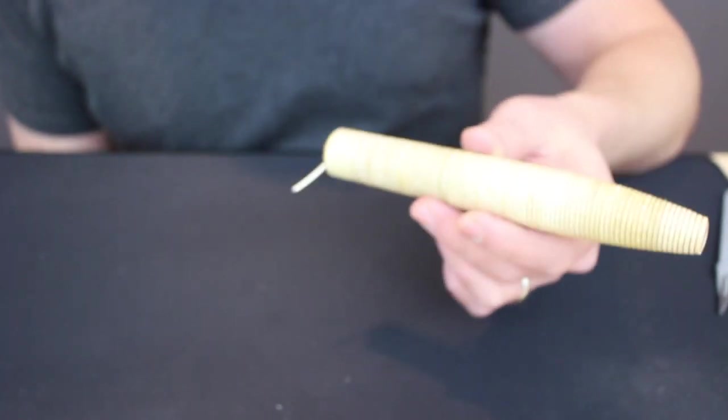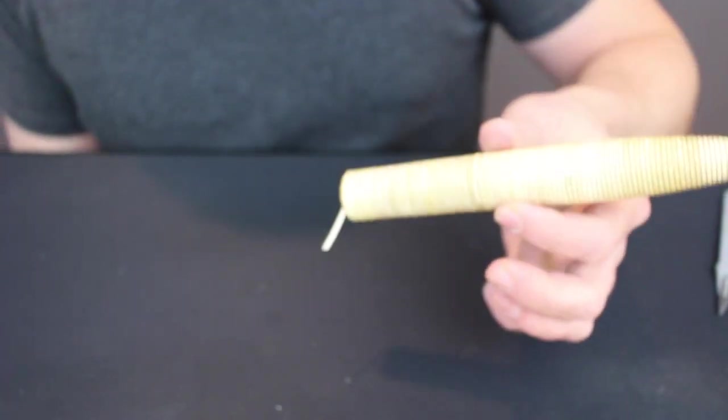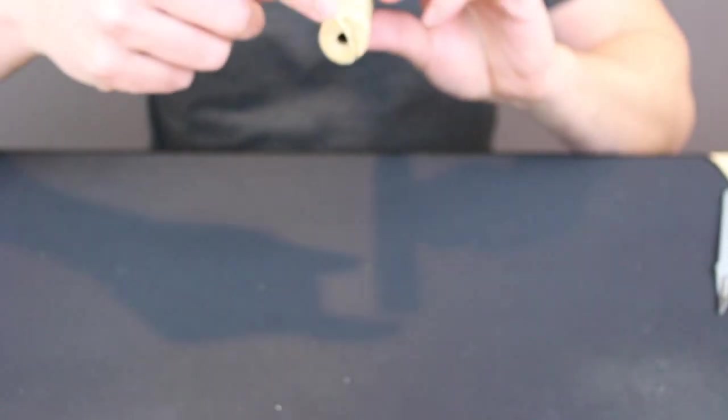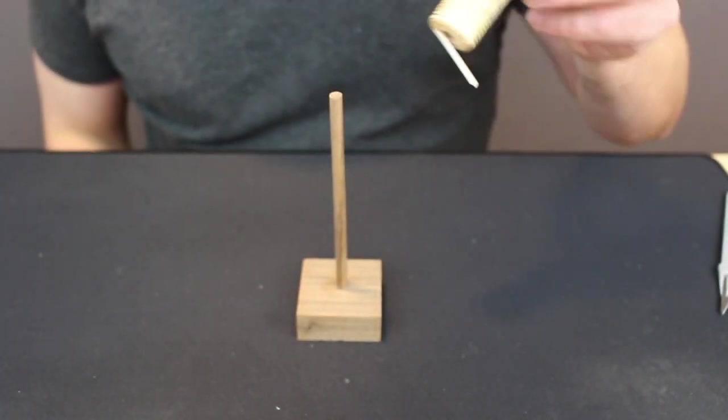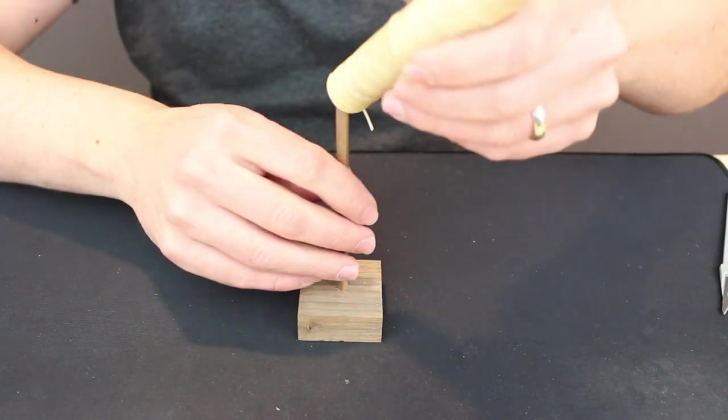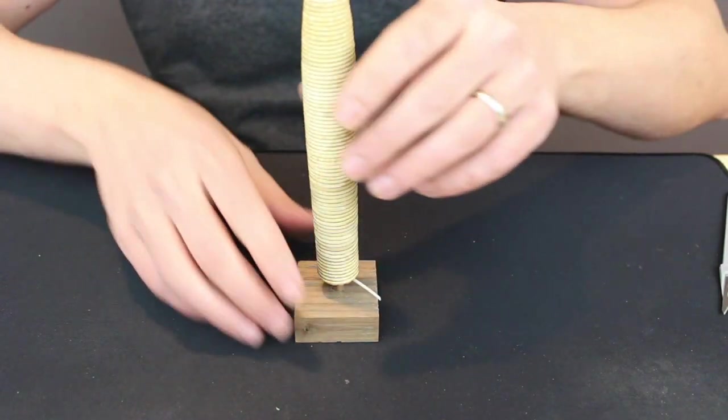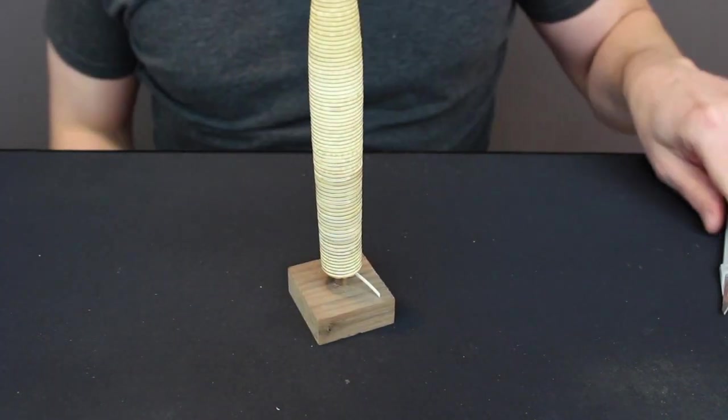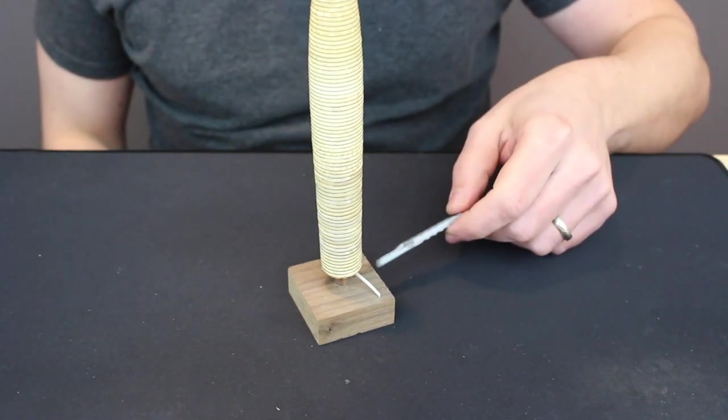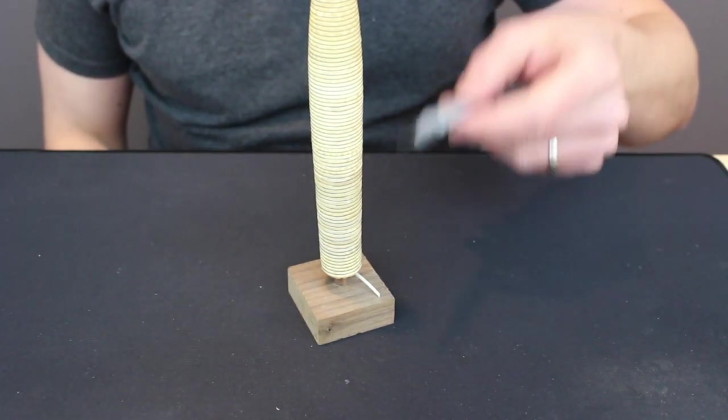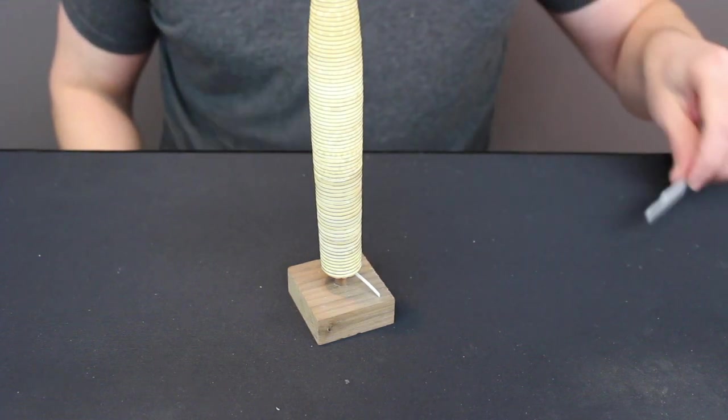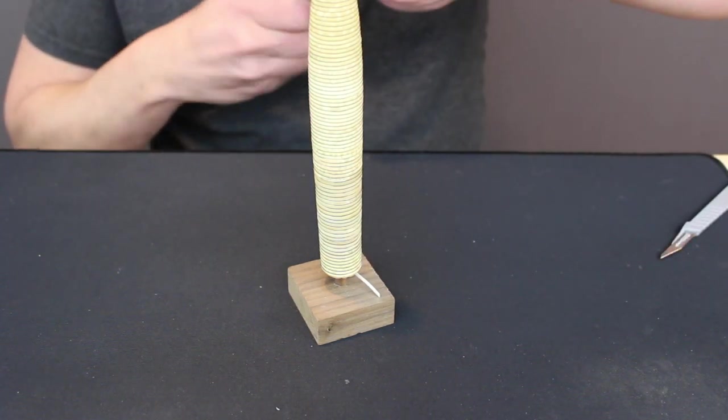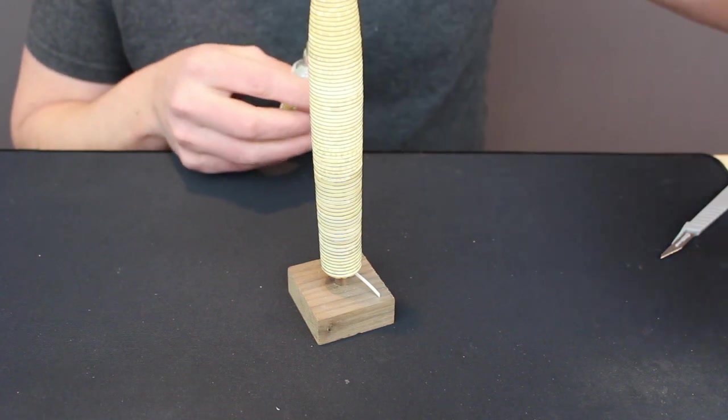Now it's time to apply varnish to protect it, and here's the reason I leave this little pigtail on the end. I use a simple jig I made to hold this while I varnish it, and I slip it over. You'll notice that little tail keeps the bottom from touching the base, so when the varnish comes down, it's not going to pool at the bottom or stick the grip to the base.